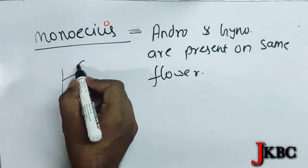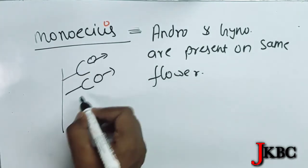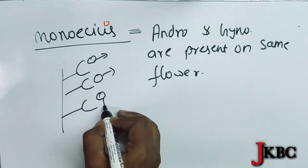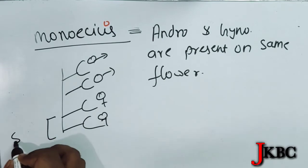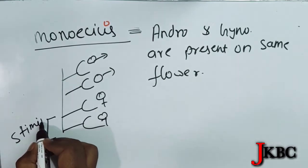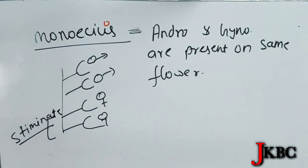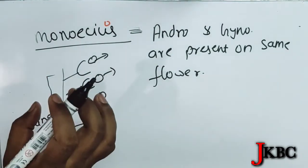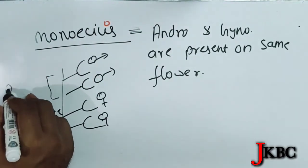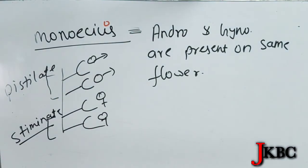Now, if only stamens are present on a flower, then this is called staminate. If only the pistil is present, then this is called pistillate.